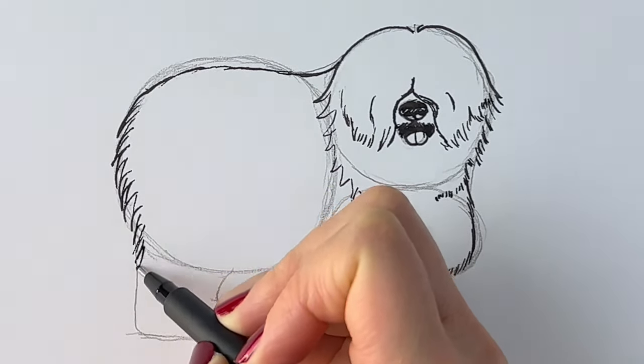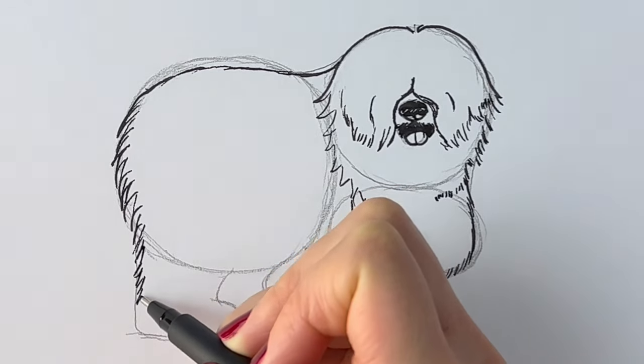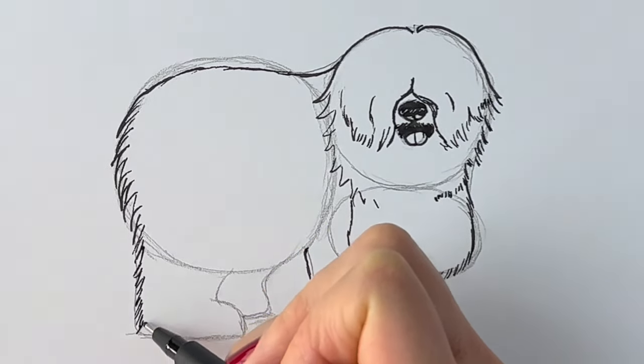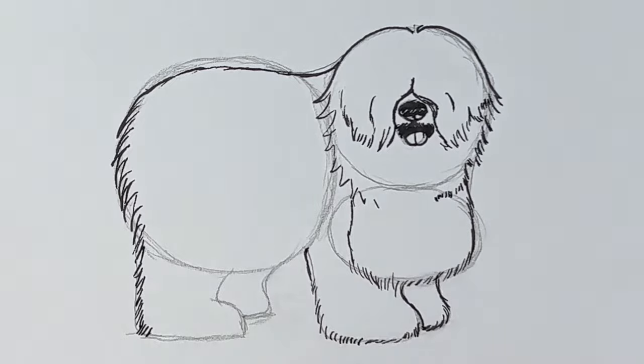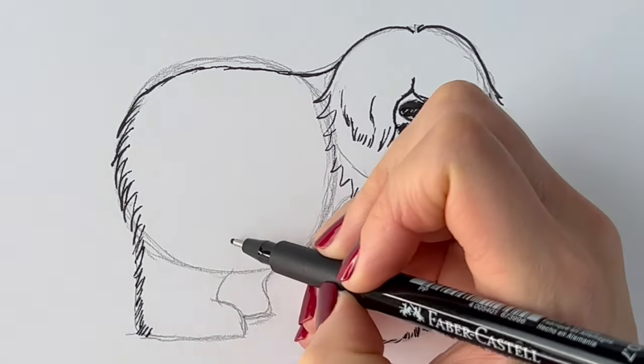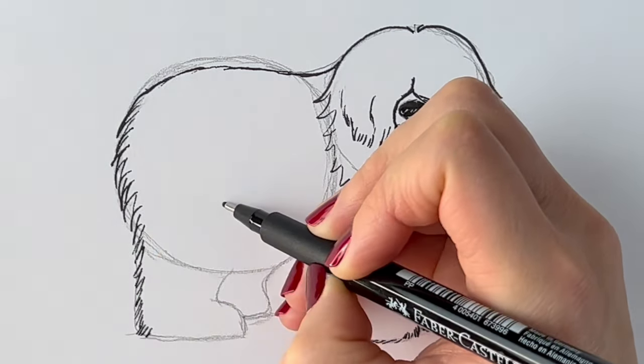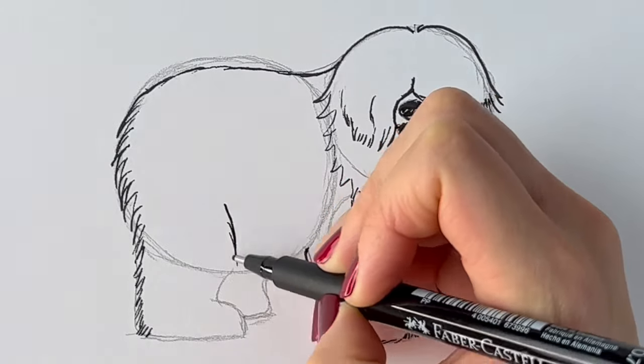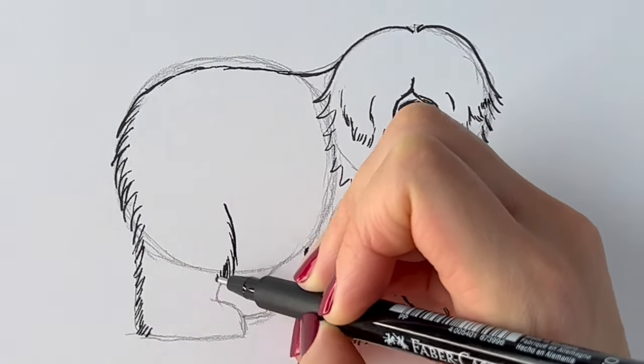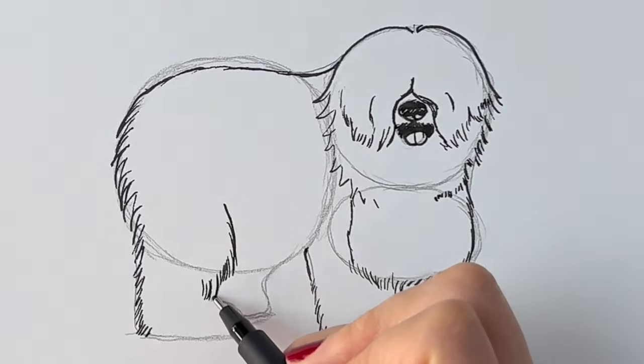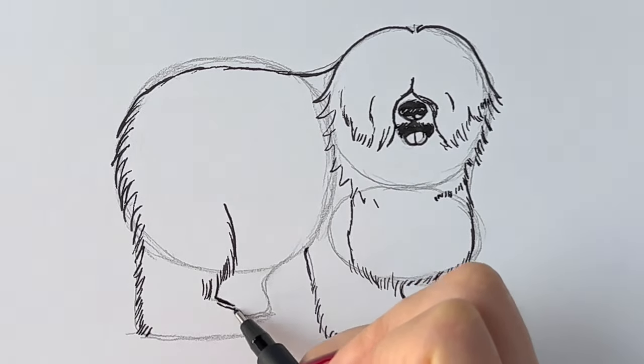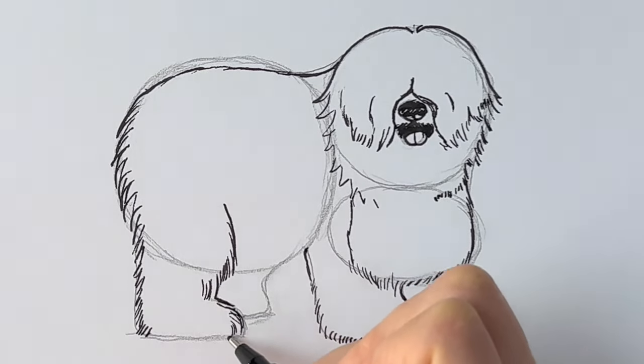Then they get slightly shorter as I go down because the fur is a little bit shorter down here. Just till I get to the bottom of that paw. I'm going to carry on doing that. So just here I'm going to be doing some longer lines. For the legs coming all the way down. And then we're going to draw the paw. Which is covered in fur.